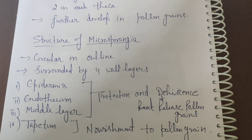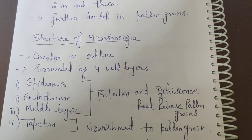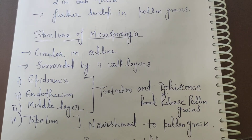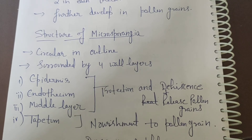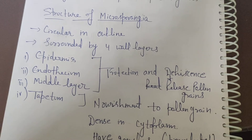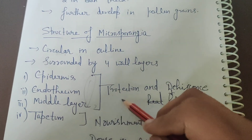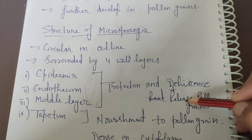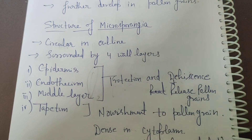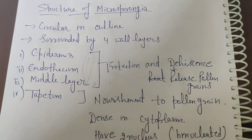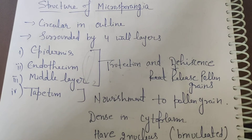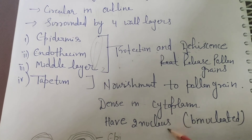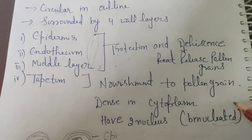Now we will talk about the structure of the microsporangia. It is circular in outline and is formed from four walls — four main layers: epidermis, endothecium, middle layer, and tapetum. The first three layers provide protection and help in dehiscence, meaning the pollen grains are released. Tapetum provides nourishment to the pollen grains — it provides food. Tapetum cells are dense, have cytoplasm, and have two nuclei, so they are called binucleated.